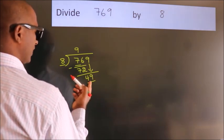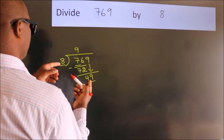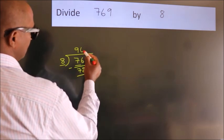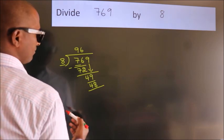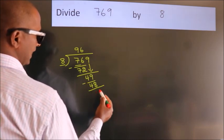A number close to 49 in the 8 table is 8 sixes, 48. Now we subtract. We get 1.